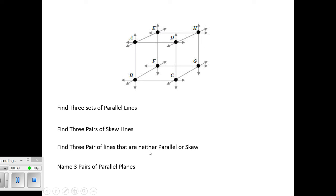Find three pair of lines that are neither parallel or skew. Well, if they're not parallel, they're not skew, then they must be intersecting. So you certainly should be able to name three pairs of intersecting lines. Because all the lines represented, any two would intersect at any one of these points, A, B, A through H.